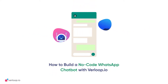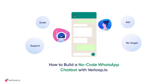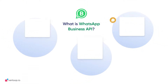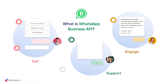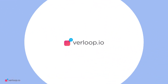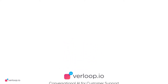Creating a WhatsApp chatbot with Verloop.io is really simple. With a WhatsApp chatbot you can scale your customer communications, sell newly launched products, upsell and cross-sell, as well as support and retarget customers for higher engagement. The WhatsApp chatbot is built using the WhatsApp Business API, and you can create a WhatsApp Business account through a business solution provider such as Verloop.io.